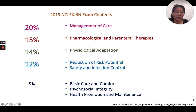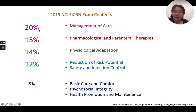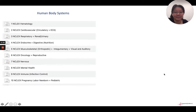First, it's important to know what NCLEX RN is and what topics they test you on. Go to the NCSBN website — they produce and develop the exam — where you can see topics, percentages, and sample questions. Notably, 20% of the exam covers management of care, 15% pharmacology and parenteral therapies, 14% physiological adaptation, 12% reduction of risk potential, and safety and infection control. The remaining 9% each covers basic care and comfort, psychosocial integrity, and health promotion and maintenance.